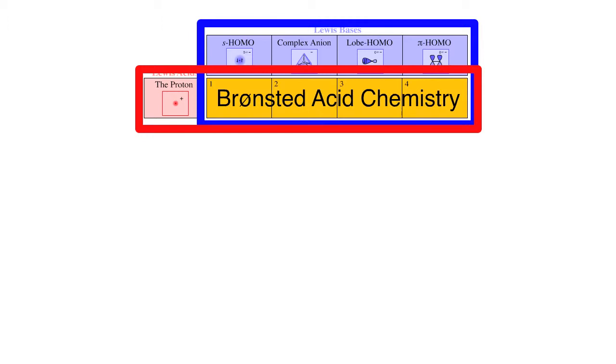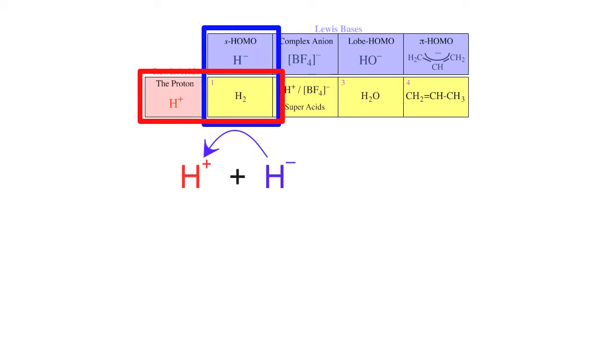We'll look at these one at a time. First, the proton plus the hydride ion gives us hydrogen H2. H2 is itself a Lewis base, and hydrogen H2 plus a proton can give us H3+, the trihydrogen cation.